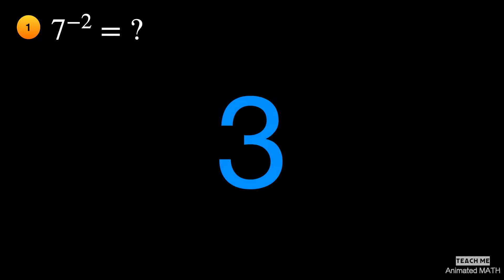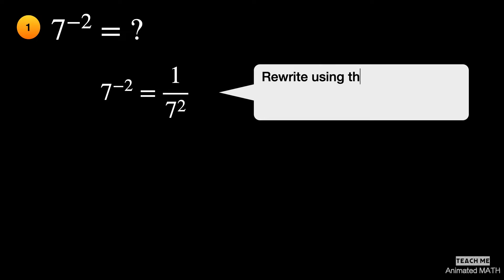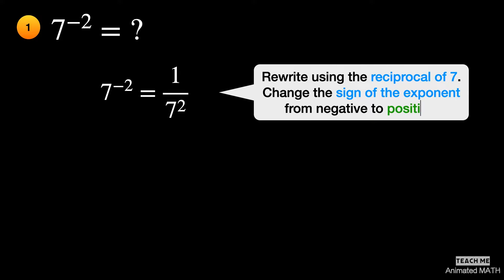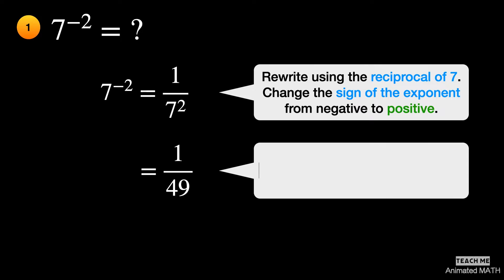Alright, let's start solving. Rewrite the expression using the reciprocal of 7 and change the exponent to positive 2. It is equal to 1 over 7 squared, or 1 over 49.